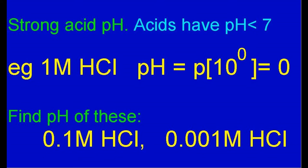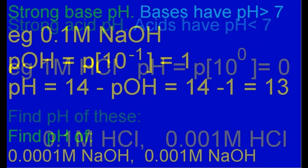For strong monoprotic acids such as the hydrochloric acid in our stomachs, the pH is easy to calculate given its molarity. For one molar hydrochloric acid, its molarity is 10 to the power of 0 so its pH is 0. So what is the pH of the other two solutions? The answers are 1 and 3. The pH of our stomach acid varies from 1.5 to 3.5.